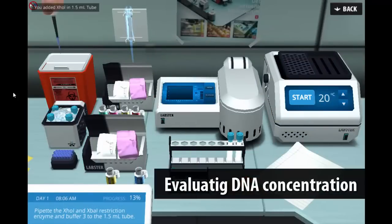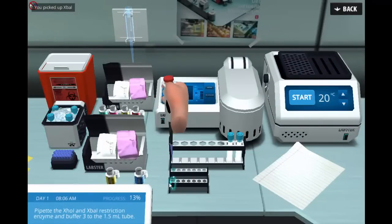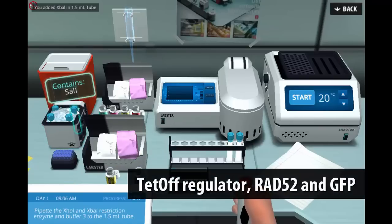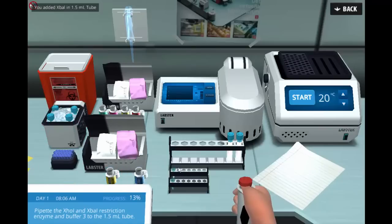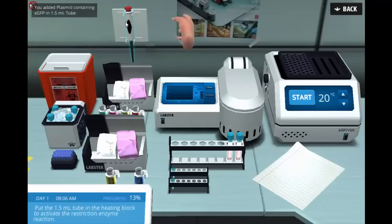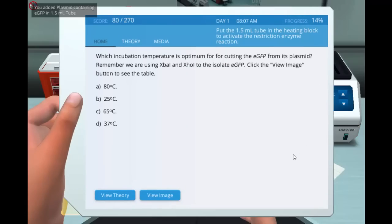Students will prepare the extracted DNA and measure the concentration. After this, students will assemble a vector containing a TED-OFF regulator, gene of interest, RAD52, and GFP using the correct ligase, buffer, and temperature of incubation.